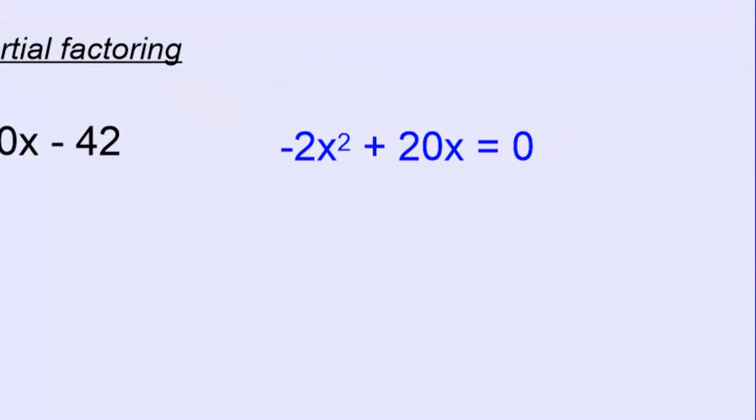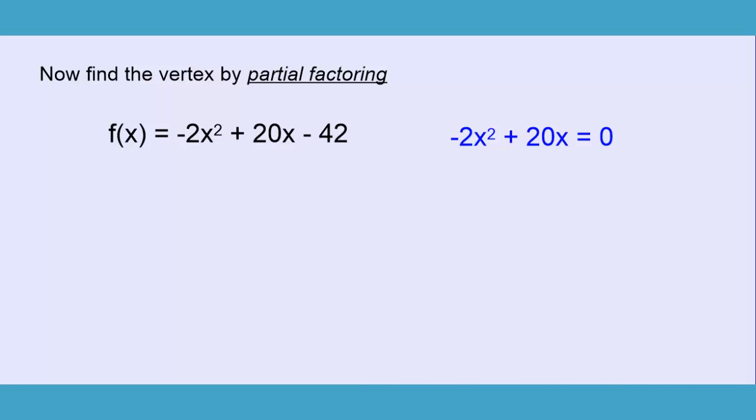This is where the term partial factoring comes into play. We're only going to factor a part of our original standard form function. When we look at -2x² + 20x, our goal here now is to solve for an x value that makes this equal to zero. So, to do that, we want a common factor. When we did the completing the square step, we factored out that negative 2 that was in front of the x². But now we want to factor out the negative 2 as well as the x, because both of them are common to both of those terms. We're left over with -2x times (x - 10), all equal to zero.